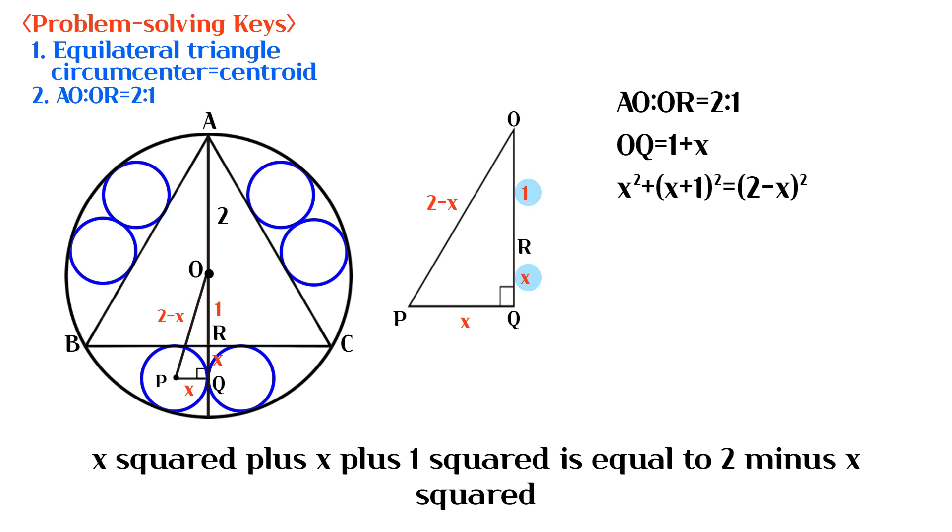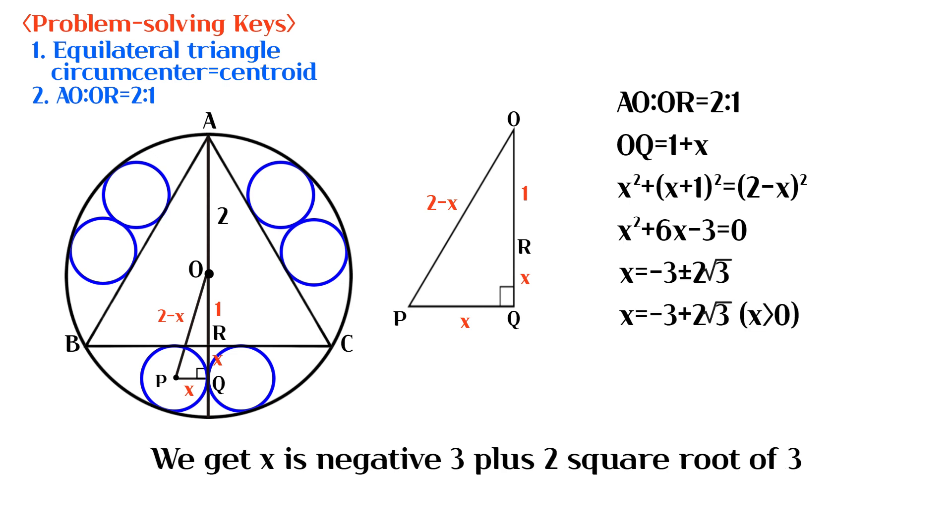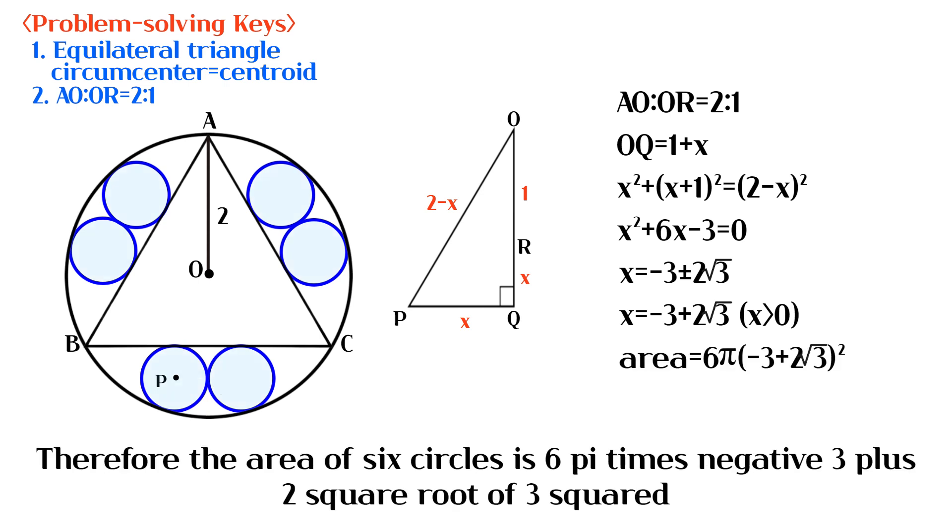X squared plus X plus 1 squared is equal to 2 minus X squared. We get X is negative 3 plus 2 square root of 3. Therefore the area of 6 circles is 6 pi times negative 3 plus 2 square root of 3 squared.